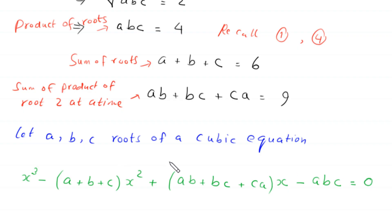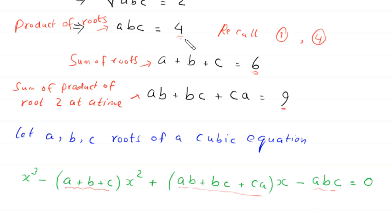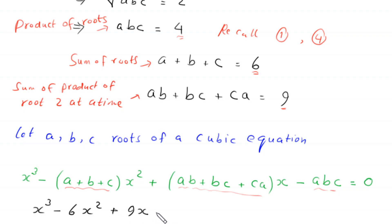Substituting our values — sum of roots 6, sum of products two at a time 9, and product of roots 4 — the cubic equation becomes x cubed minus 6x squared plus 9x minus 4 equals 0.